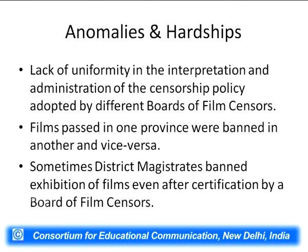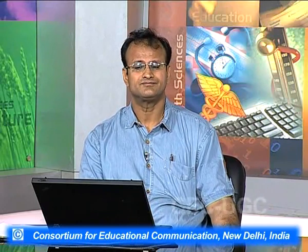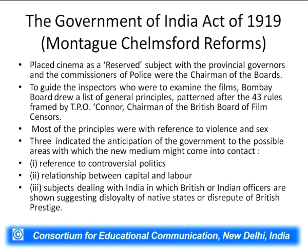Films passed in one province were being banned in another and vice versa. A film allowed in one part of India was not permitted in another because it was considered objectionable. Additionally, a lot of power was given to district magistrates — even if the censor board allowed a film, the district magistrate could decide to ban it. In 1919, developments in the Montague-Chelmsford Reforms placed cinema as a reserved subject with the provincial governors.